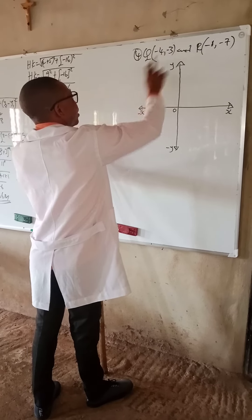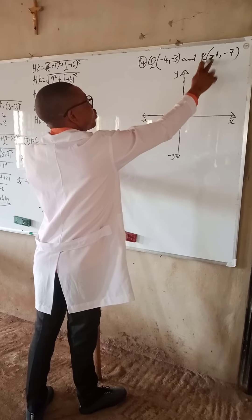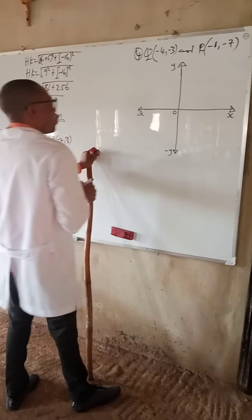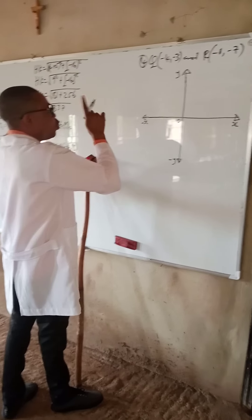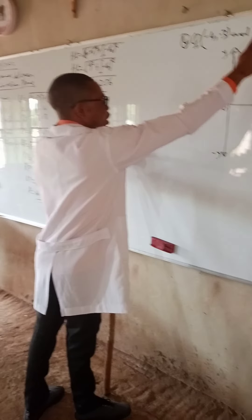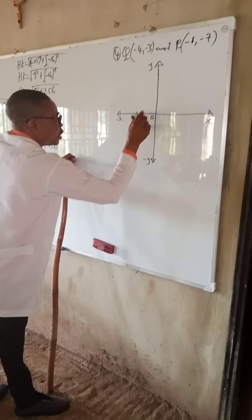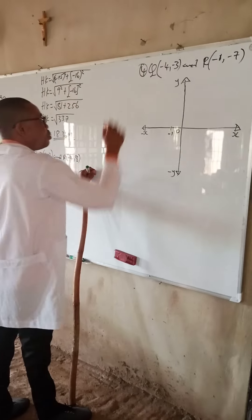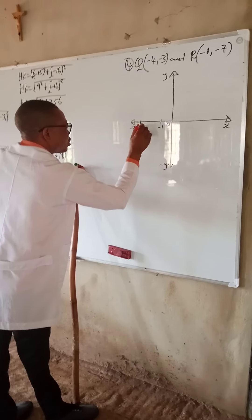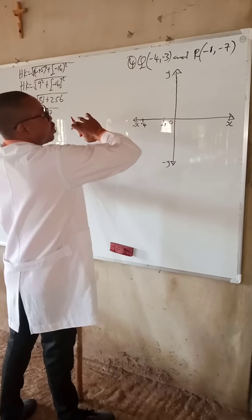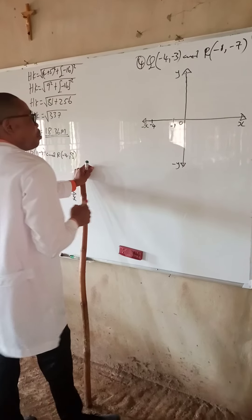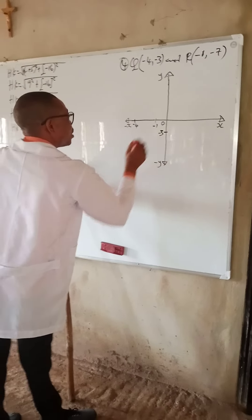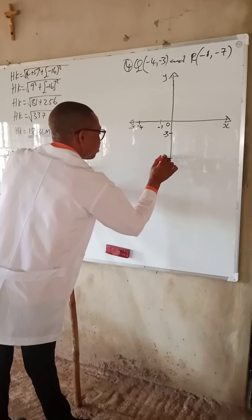We identify x1, y1, x2, and y2. We locate minus 1 first on the negative x-axis, then minus 4 also on the negative x-axis. For the y-axis, all values are on the negative y-axis: the first is minus 3, and the second is minus 7.